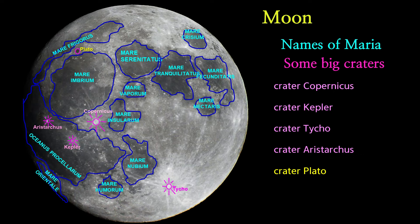Crater Plato. Plato is a lava-filled lunar impact crater on the Moon. It is located on the northeastern shore of Mare Imbrium. It was named after the ancient Greek philosopher Plato.